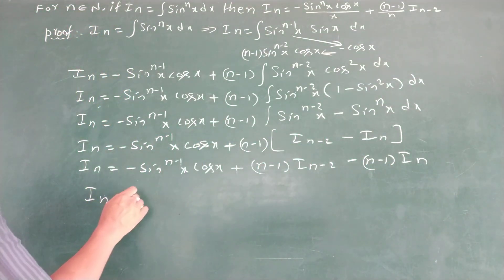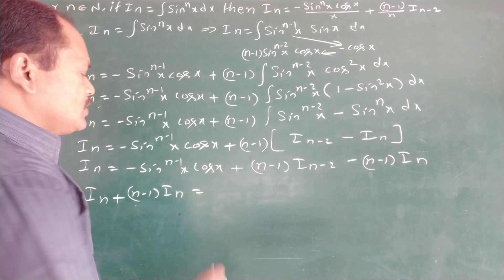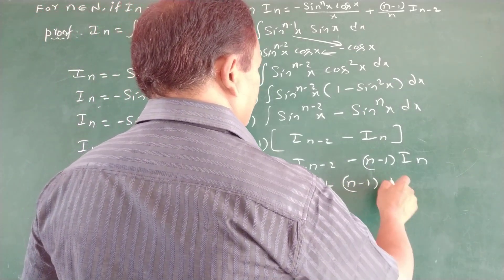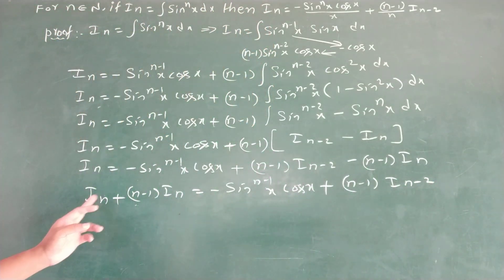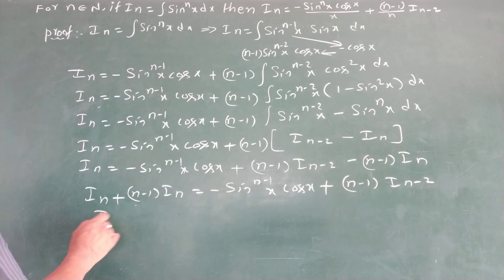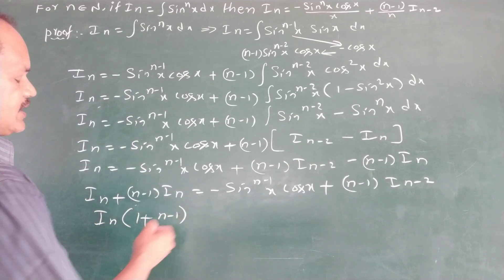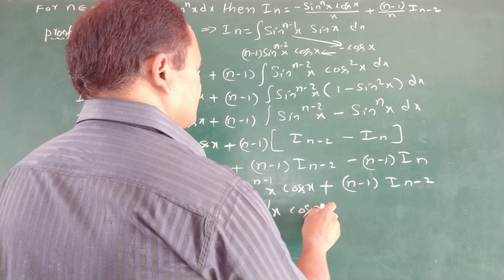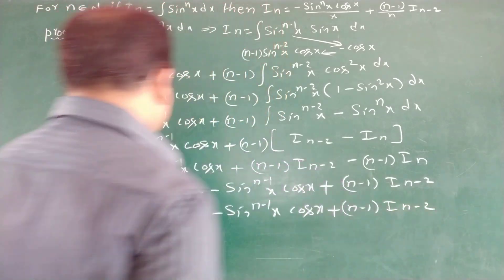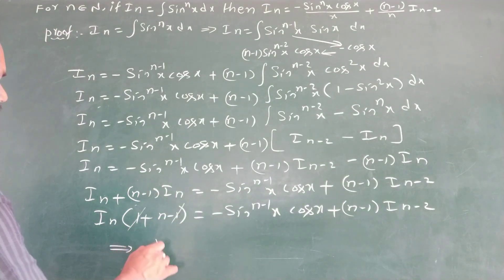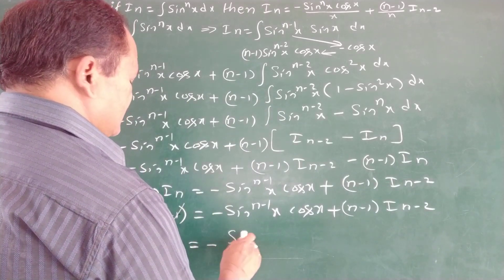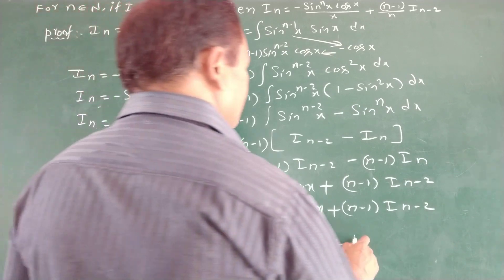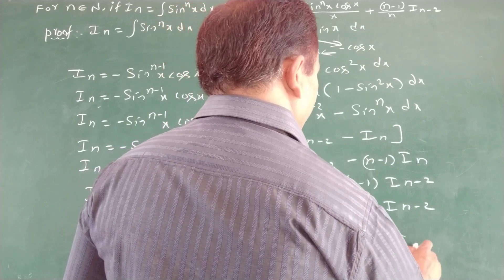Taking Iₙ to the left side: Iₙ plus (n minus 1)Iₙ equals minus sinⁿ⁻¹x times cos x plus (n minus 1) times Iₙ₋₂. Taking Iₙ as common factor: Iₙ times (1 plus n minus 1) equals the right side. Since 1 plus n minus 1 equals n, finally Iₙ equals minus sinⁿ⁻¹x times cos x divided by n, plus (n minus 1)/n times Iₙ₋₂.